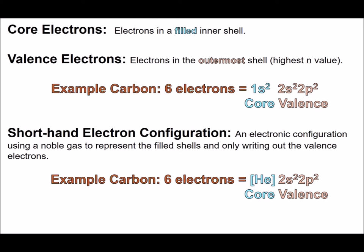Electron configurations become long to write when atoms have a lot of electrons. The use of a shorthand configuration is common. To write the shorthand configuration, we need to know the difference between core electrons and valence electrons. Core electrons are those in the filled inner shells of an atom. The valence electrons are the electrons in the outermost shell, the highest n value.